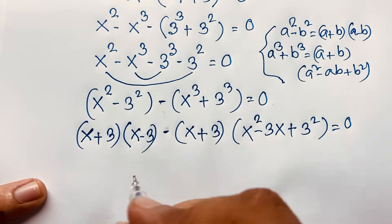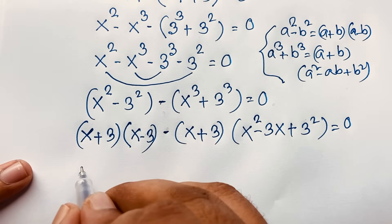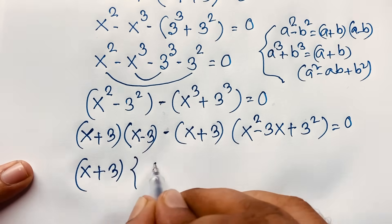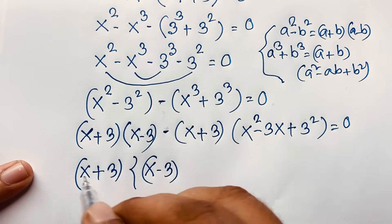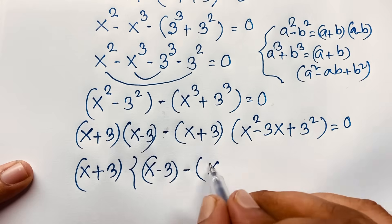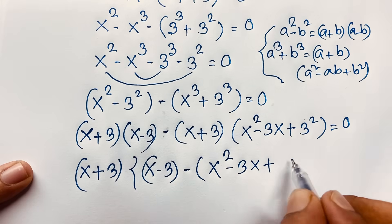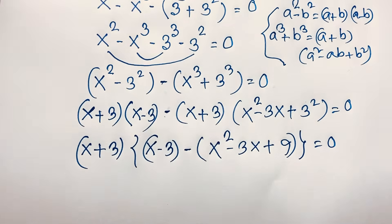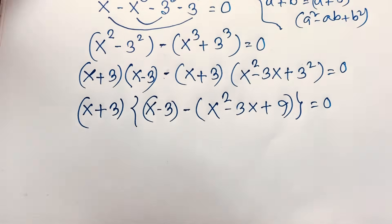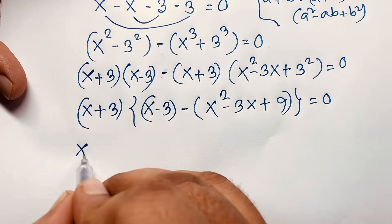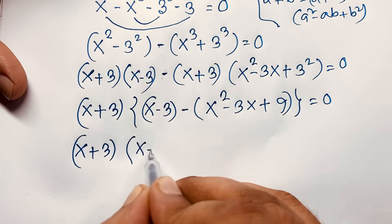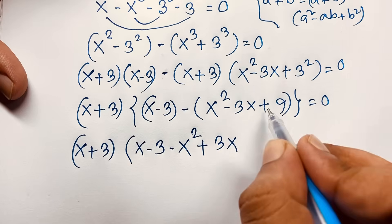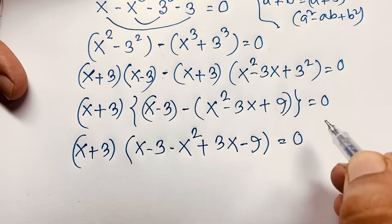You can see easily that x plus 3 is common. So if I take x plus 3 as common, this divided by that gives x minus 3. Taking the negative sign, it will be x squared minus 3x plus 9. So we have x plus 3 times x minus 3, plus minus it gives minus x squared minus minus which becomes plus 3x, plus minus which becomes minus 9, equal to 0.